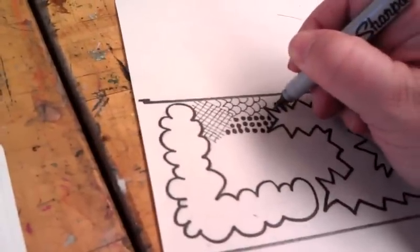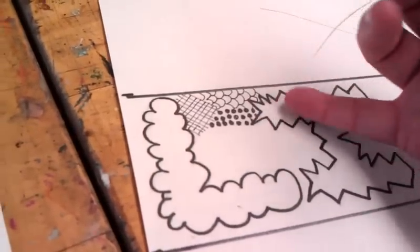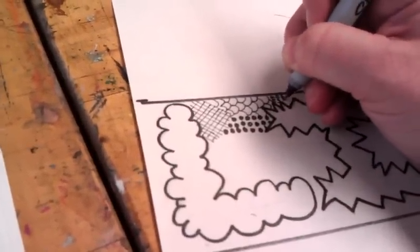And you also want to make sure that you go up underneath your letter, so that it appears that the pattern is under the letter. Maybe now I'll go back to doing a darker value.